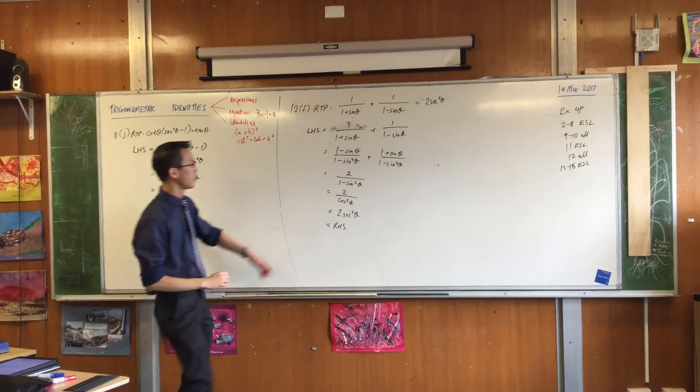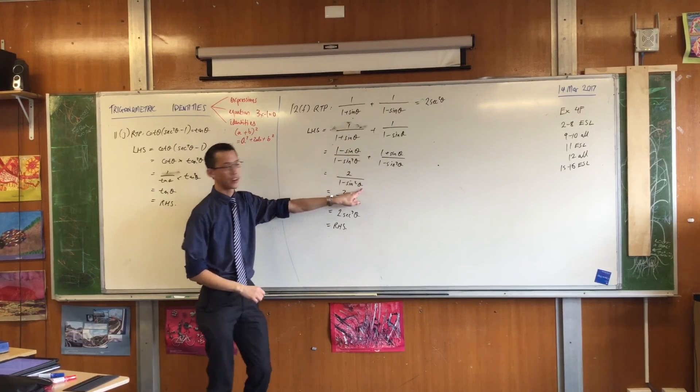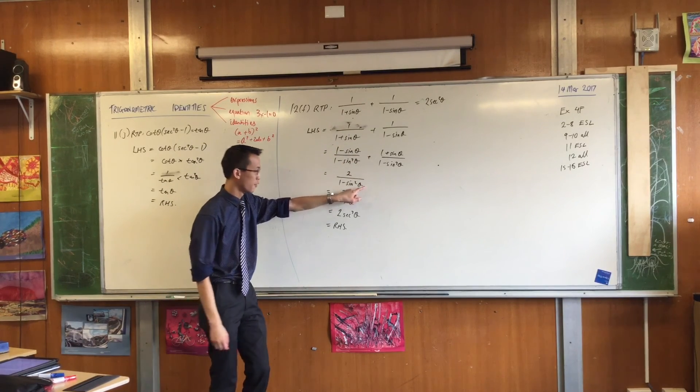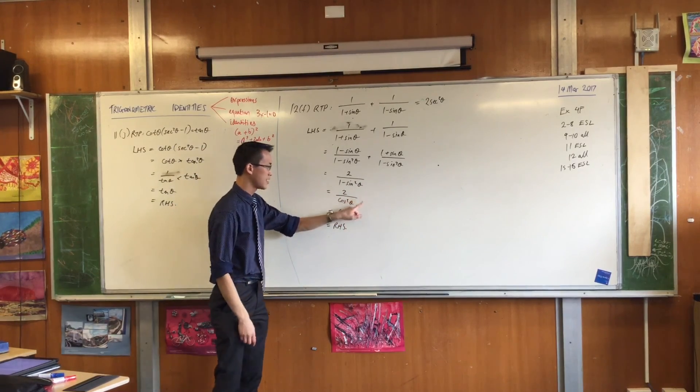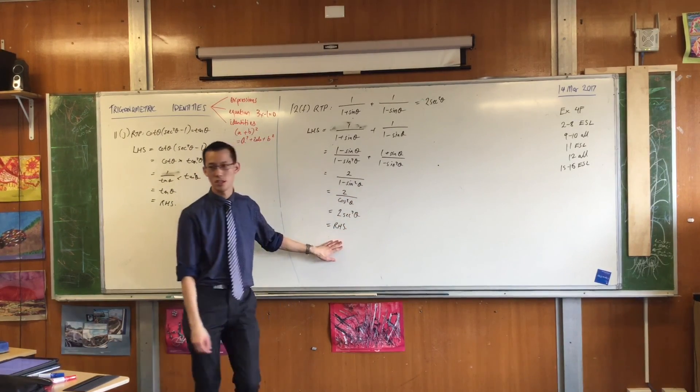I should be able to see from your working, oh, okay. From this line to this line, he understands how to combine fractions. From this line to this line, he's used a Pythagorean identity. From this line to this line, she knows what the reciprocals are, and then there she is.